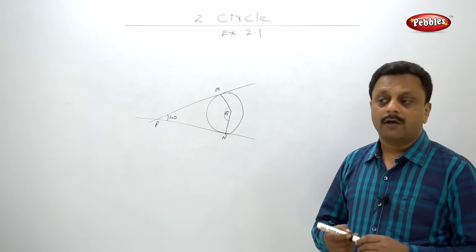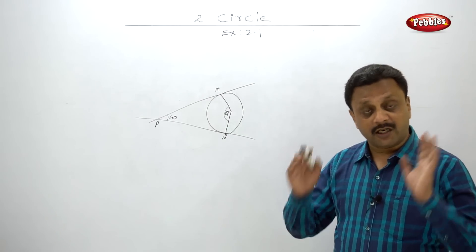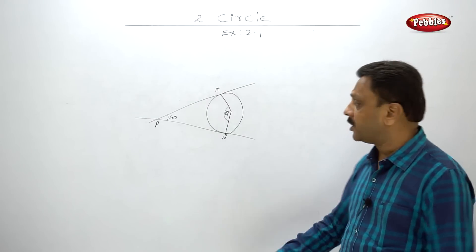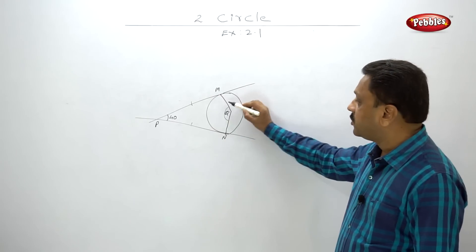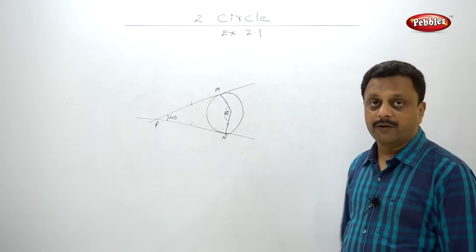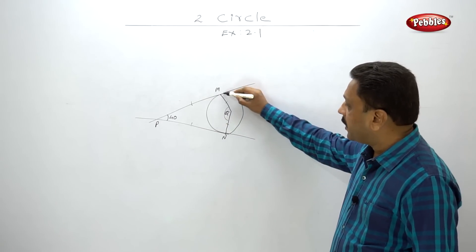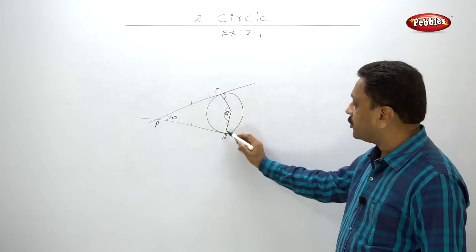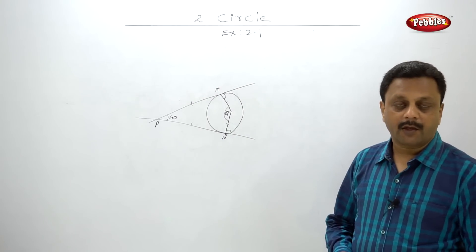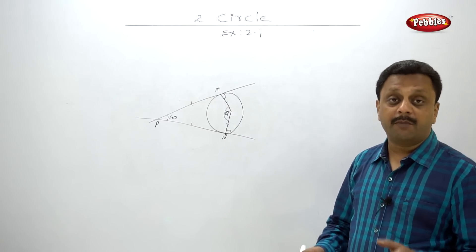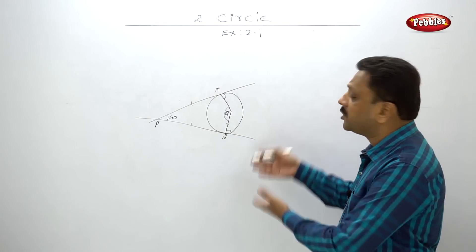Whenever you analyze a figure, some information may not be useful to you later on, but first understand the full figure. We know that tangent segments are equal, and the radius and tangent are at right angles. Maybe all the information we have analyzed is not applicable or useful to solve this problem.